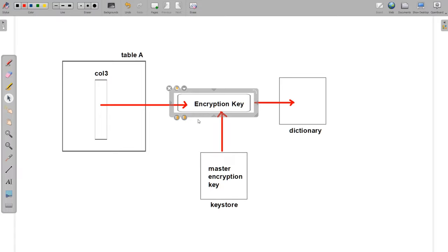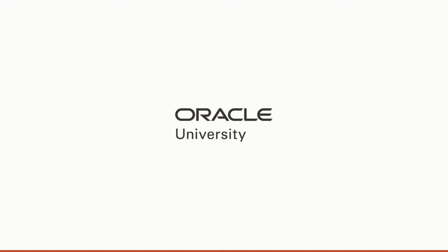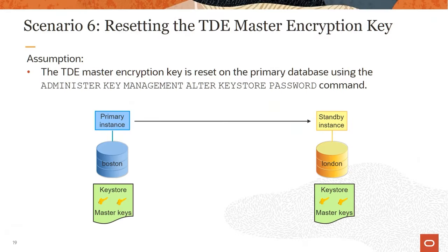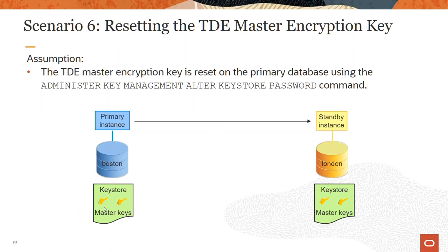Scenario 6 is about what happens when you reset the master encryption key. If there are any changes to the master key in the primary database using ADMINISTER KEY MANAGEMENT ALTER KEYSTORE PASSWORD, you must make a fresh copy from the primary database and move it to the standby database. That way, we can use the updated master key. That's the key thing to know for this scenario.